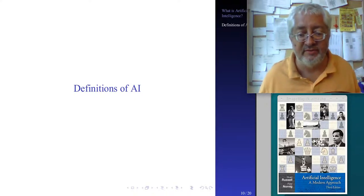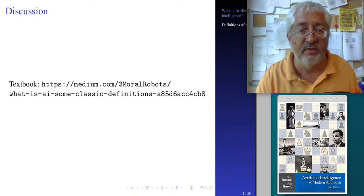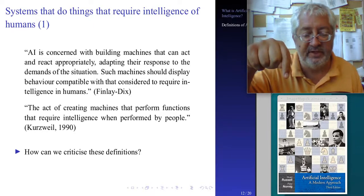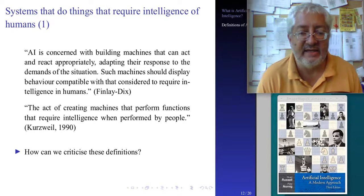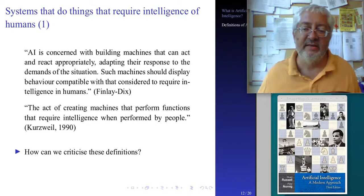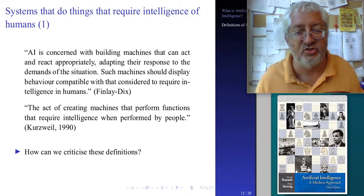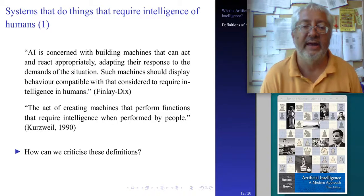Let's briefly look at some definitions of AI that have been given, and perhaps we can use them or criticize them. These definitions come from this book you see here. The first definition would be: systems that do things that require intelligence of humans. This is a definition of AI that tries to relate what systems do behaviorally to what humans do. Hindley-Dix says AI is concerned with building machines that can act and react appropriately, adapting their response to the demands of the situation. Such machines should display behavior compatible with that considered to require intelligence in humans.